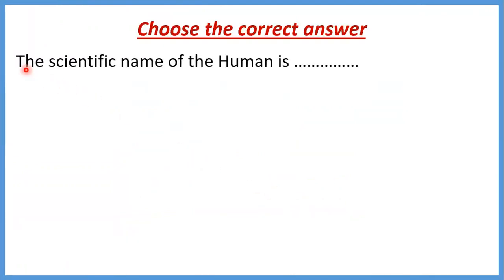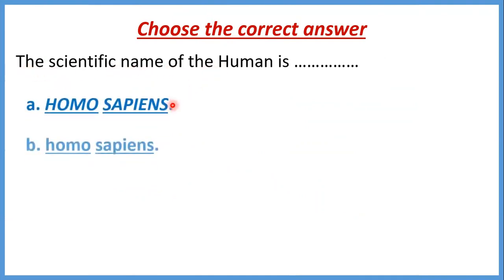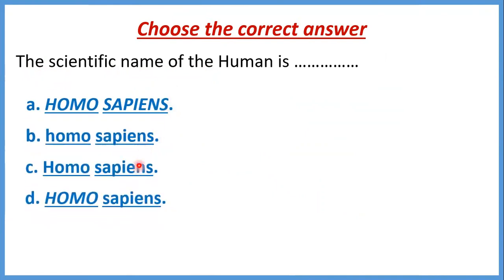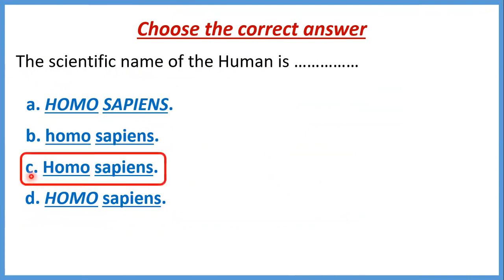لو جالنا سؤال: choose the correct answer — the scientific name of the human is what? According to Carolus Linnaeus، الاسم لازم يبقى two names بالLatin language، الfirst يمثل الgenus والsecond يمثل الspecies، بس الgenus لازم يبقى start with capital letter والspecies start with small letter. لو بصينا هنلاقي إن الcorrect answer هو choice C — لأن في الخيار A الكلمات كلها مكتوبة بالcapital letters، وفي B الgenus مكتوب بالsmall letter، وفي D الgenus كلها capital letter وإحنا عايزين الfirst letter بس.